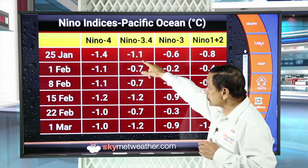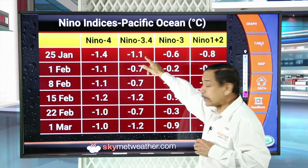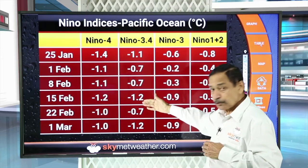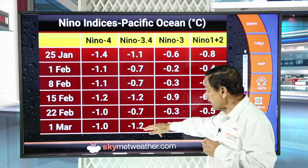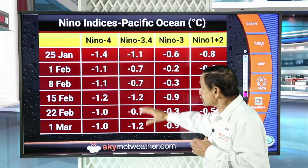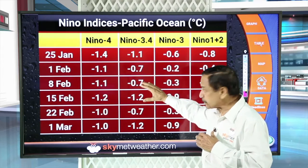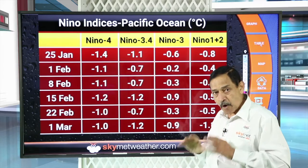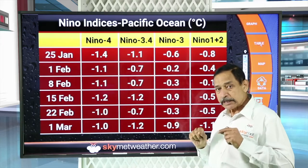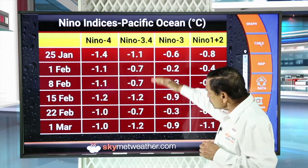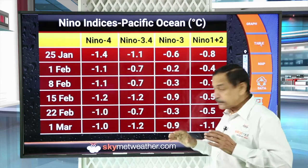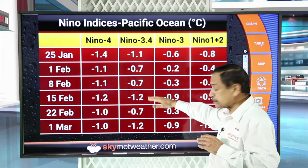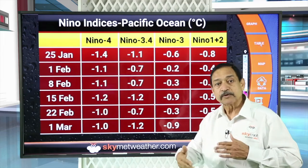In Nino 3.4 there is a lot of fluctuation. On 25th January the index was minus 1.1 degrees Celsius, then it dropped to minus 0.7, rose again to minus 1.2, dropped again to minus 0.7, and now it is minus 1.2. Sufficient cooling is still present in the Pacific, more so in the central and western Pacific. Sea conditions retain their memory and do not lose or gain heat quickly. These fluctuations indicate the thermocline — sea surface temperature from the surface down to about 150–200 meters depth — is undergoing a change, meaning La Nina is taking baby steps toward neutral conditions.